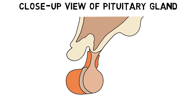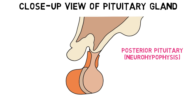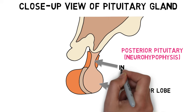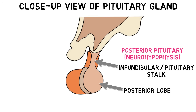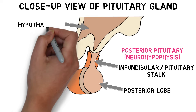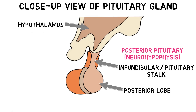The posterior pituitary is also called the neurohypophysis. It is composed of the posterior lobe of the pituitary and a structure called the infundibular or pituitary stalk, which connects the hypothalamus to the pituitary gland.